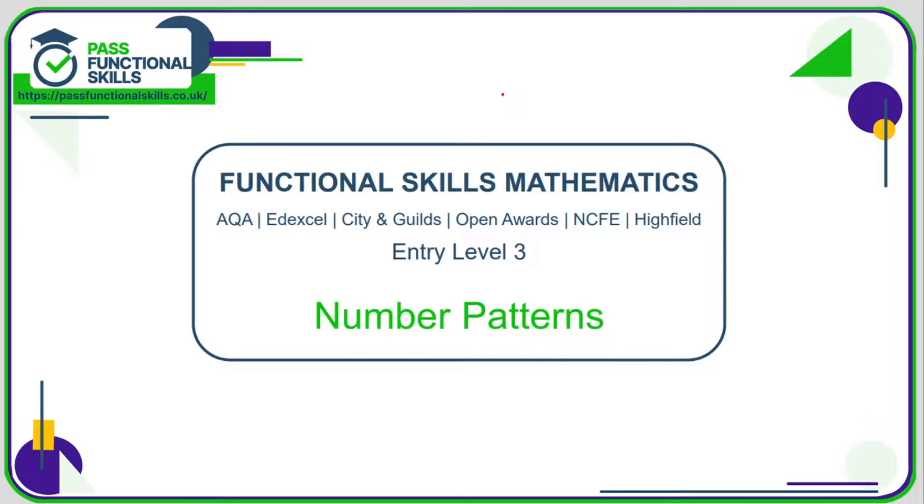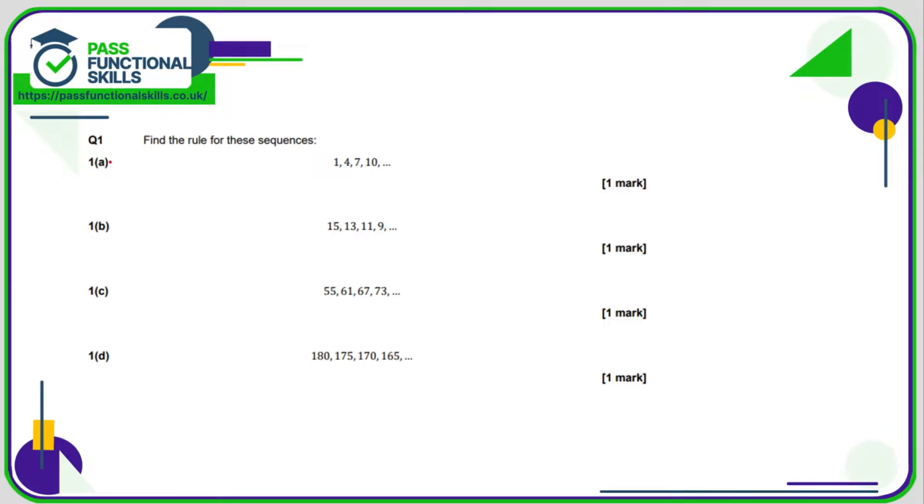So let's look at number 1a. So 1, 4, 7, 10, we can see that we are going up in 3, so all we're doing is adding 3 to the previous number. 15, 13, 11, 9, we can see we're just going down in 2, so we're just subtracting 2 from the previous number.